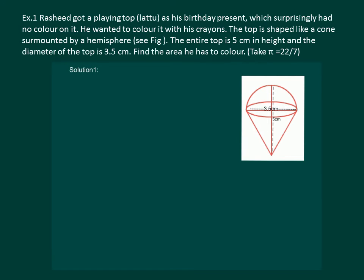Let us now take up some examples and understand the concept more thoroughly. Russian got a playing top as his birthday present, which surprisingly had no color on it. He wanted to color it with his crayon. The top is shaped like a cone surmounted by a hemisphere. The entire top is 5 cm in height and the diameter of the top is 3.5 cm. Find the area he has to color.